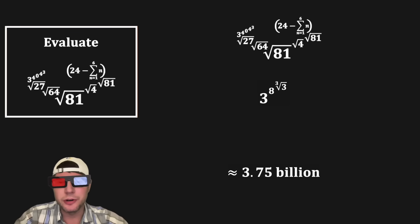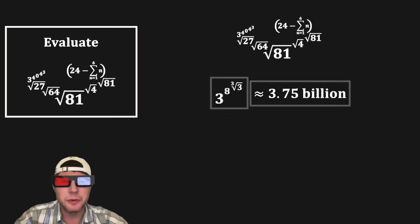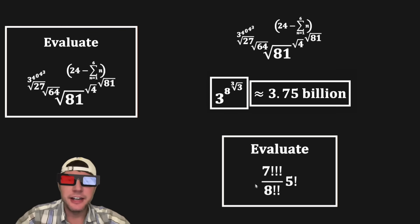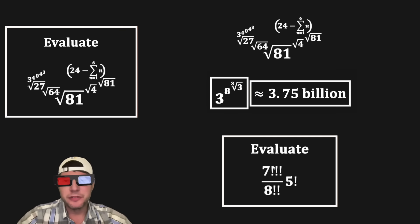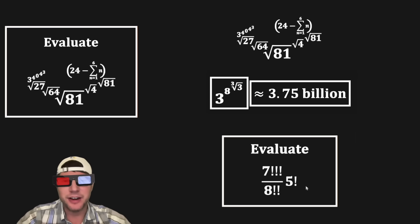Those are the answers to our question. Let's put boxes around them — how exciting! And here's tomorrow's problem: we're evaluating 7 triple factorial over 8 double factorial times 5 factorial. This looks like it'll be a fun one. How exciting!